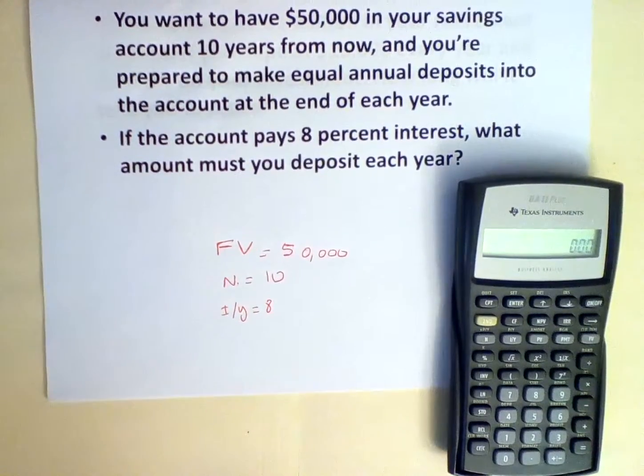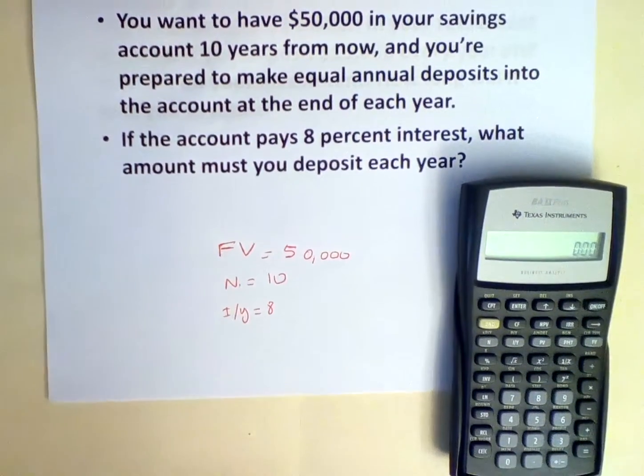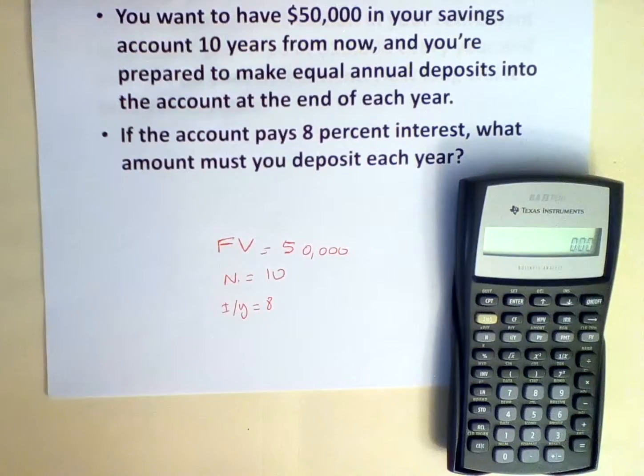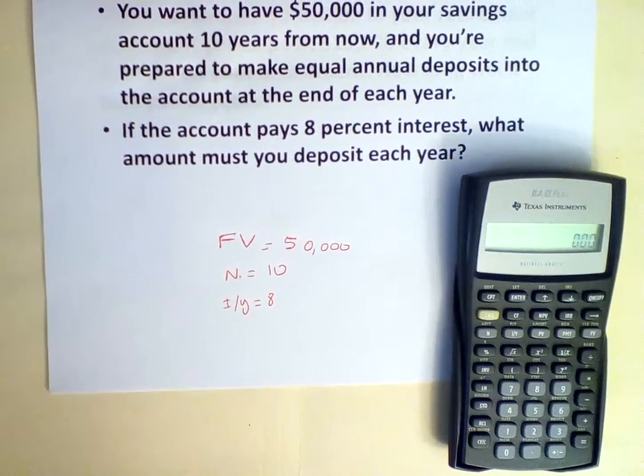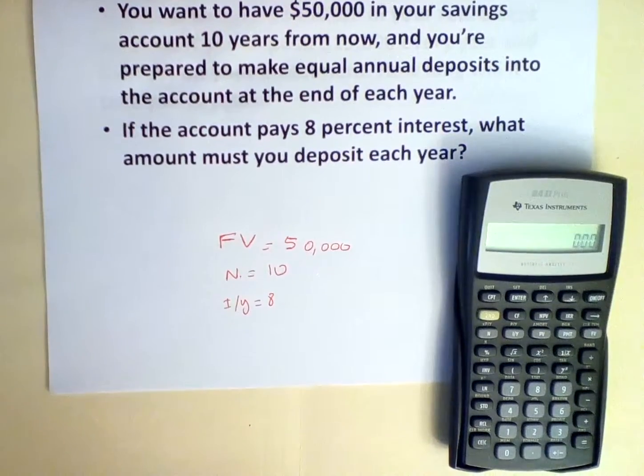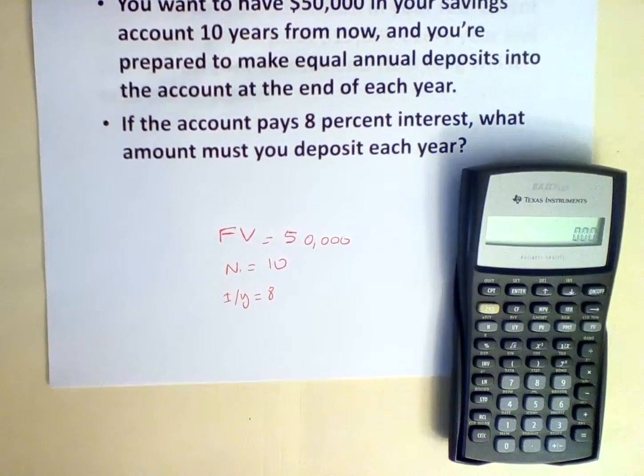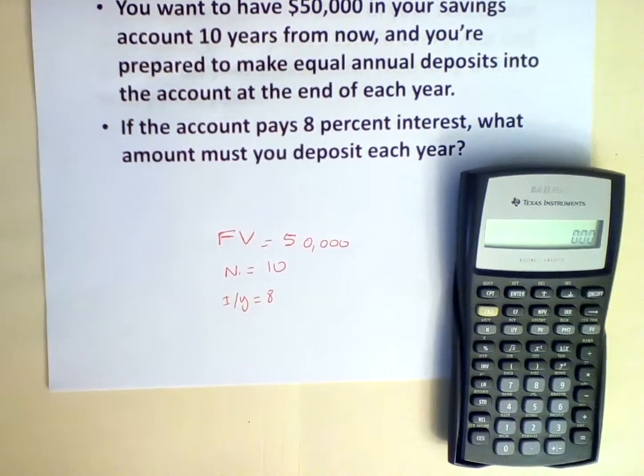You want to have $50,000 in your savings account 10 years from now and you're prepared to make equal annual deposits into the account at the end of each year. If the account pays 8% interest, what amount must you deposit each year?